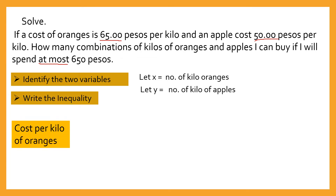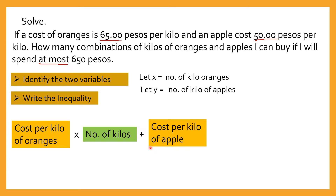To write the inequality, you need to write: cost per kilo of oranges times how many kilos you're going to buy, plus cost per kilo of apples and how many kilos that you're going to buy, then the inequality — which is at most — is less than or equal to 650 pesos.